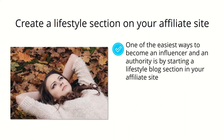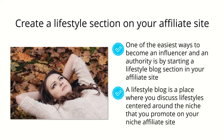Create a lifestyle section on your affiliate site. One of the easiest ways to become an influencer and an authority is by starting a lifestyle blog section in your affiliate site. Doing this will allow you to write about your niche in a way that goes beyond descriptions and marketing. A lifestyle blog is a place where you discuss lifestyle centered around the niche you promote, and it allows your visitors to foster conversation between you and your audience, which will increase visits to your affiliate sites as well as your ranking.